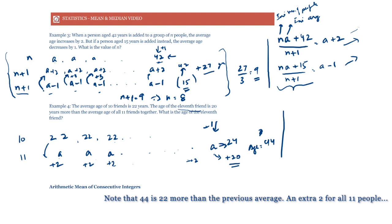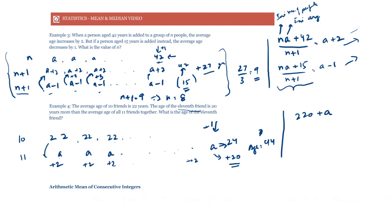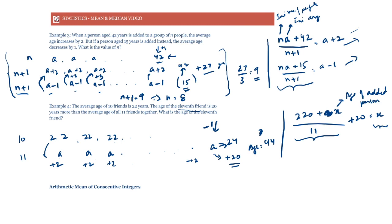Using the formula: sum of ages is 22×10 = 220, plus x (the 11th friend's age), divided by 11 equals x minus 20 — since the new average plus 20 equals x. We can solve for x this way. The intuitive method avoids calculations entirely, but the formula works just as well if the conceptual approach doesn't feel natural.